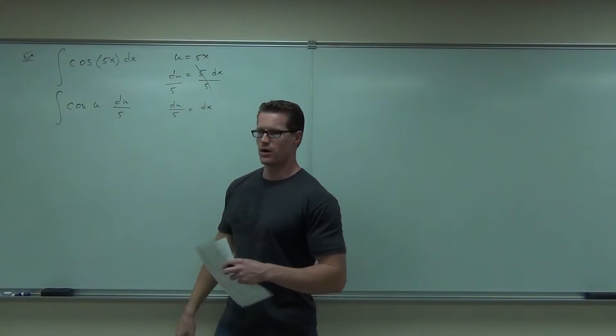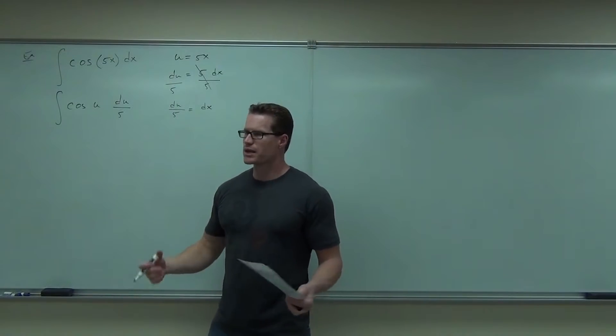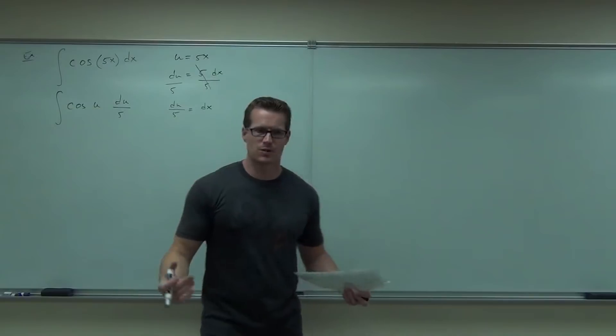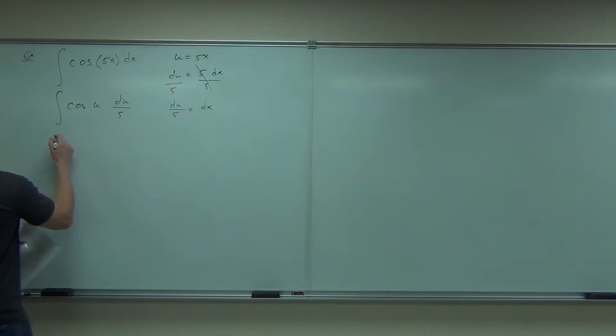Now, the over 5, what can I do with that over 5? That's why we disregard the constants. We really don't care about those. It's all about the variables. So this over 5 means one-fifth cosine u du.